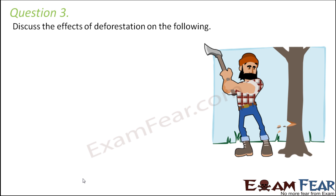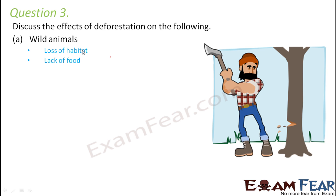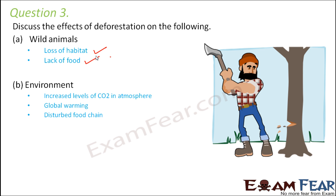Question 3 discusses the effects of deforestation on various things. Deforestation is the cutting down of forests on a large scale. On wild animals: when forests are cleared, animals lose their habitat. Loss of habitat is one consequence, and lack of food is another — the animals will not be able to get their food. These are the main consequences of deforestation on wild animals.